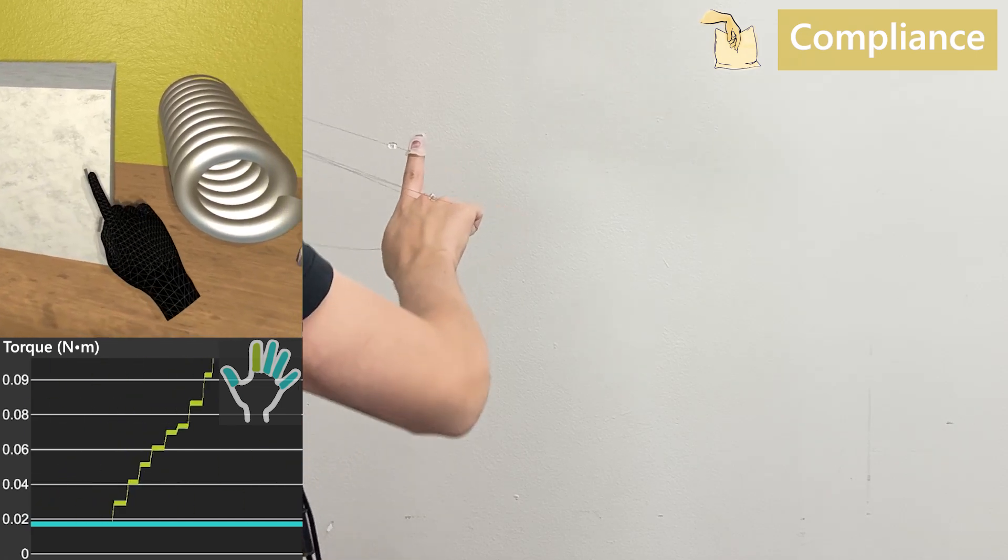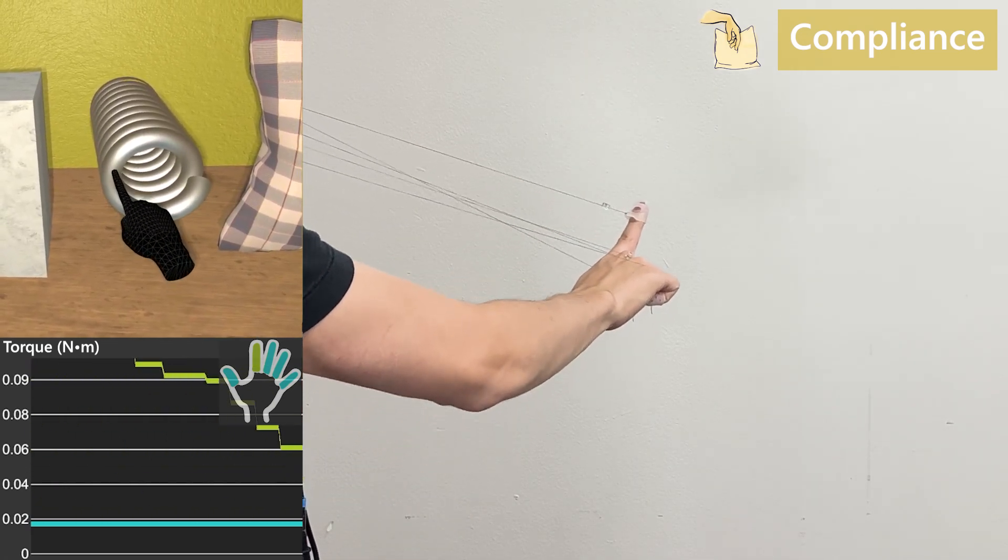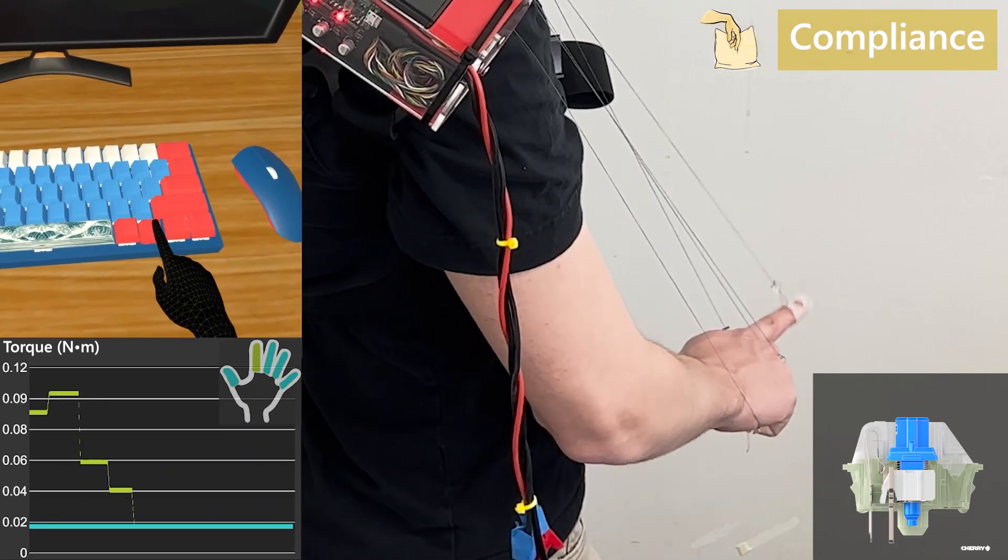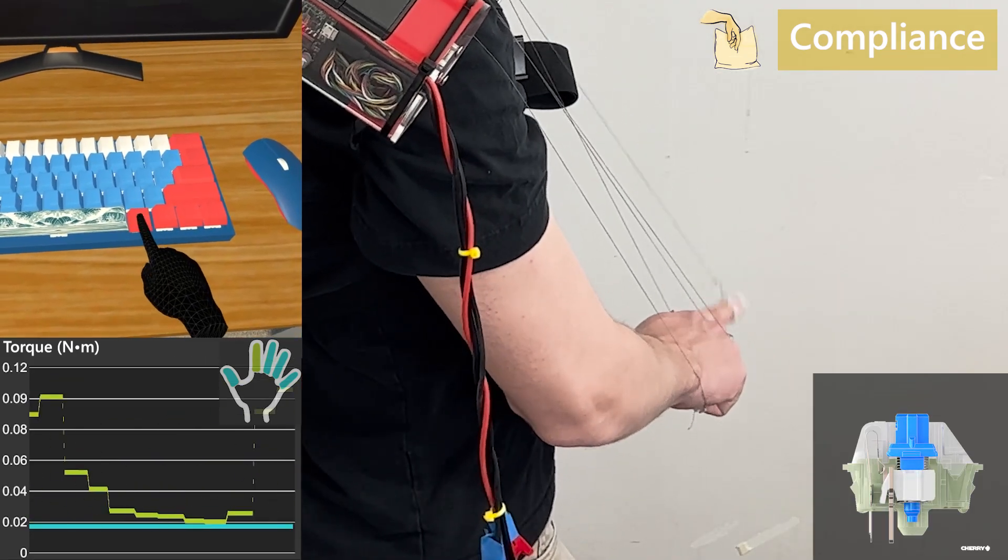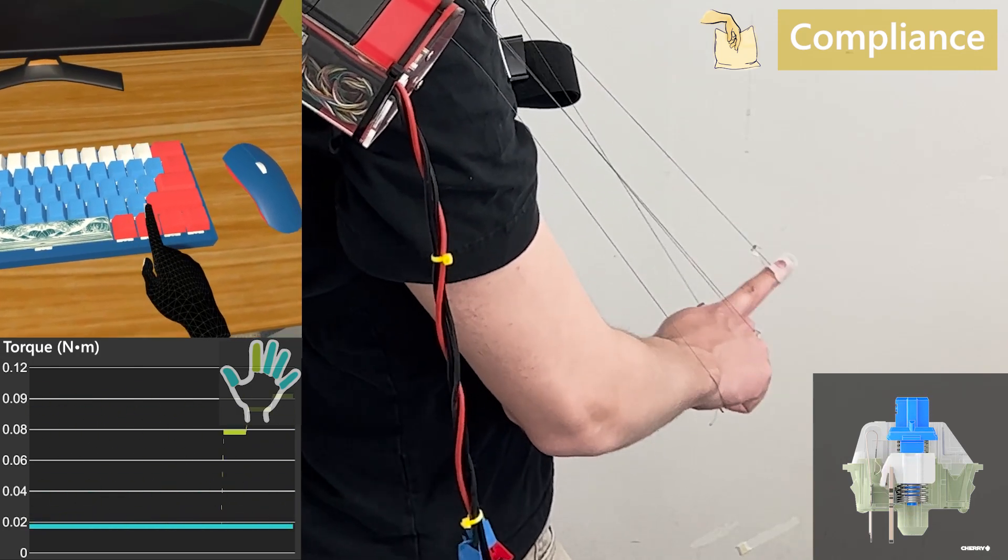In addition to rigid kinematic braking, we can also vary motor torque to realistically simulate material compliance. Non-linear compliance can be used to create buttons that click, or even emulate the feeling of a mechanical toggle switch.